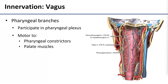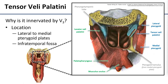All of these muscles are innervated by the vagus nerve except for the tensor veli palatini. Vagus nerve is what you would expect for these muscles — they're sitting in the pharynx, and vagus provides motor innervation for all of the pharynx. Tensor veli palatini, however, is innervated by the mandibular nerve instead, because it's not really a pharyngeal muscle — it's an infratemporal muscle, and infratemporal muscles are all innervated by the mandibular nerve.